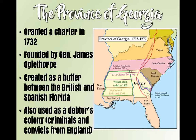Georgia kind of gets a bad rep. Back in England they had the English debt law, where if you owed someone money you could be put in jail until that money was repaid. You can see the cycle — you're in jail, how do you make that money? So Oglethorpe was like, 'Let's make a colony where people can go and work off their debts.' You come to Georgia, work there, and that's going to pay off your debts back in England.